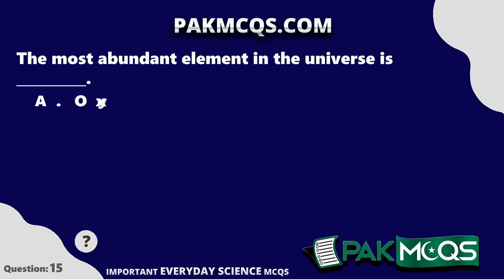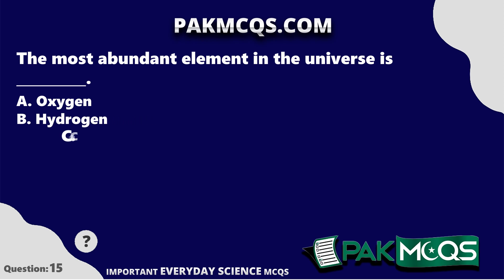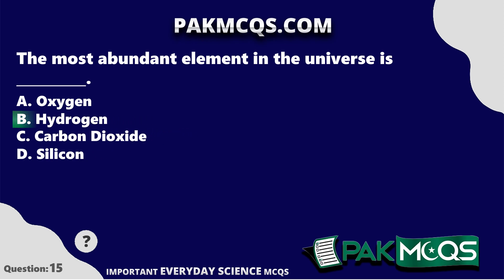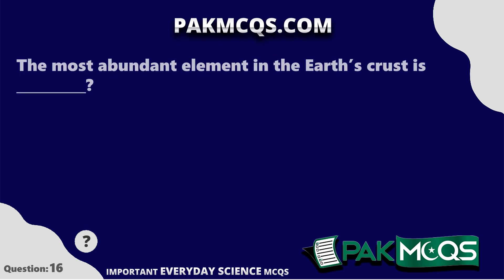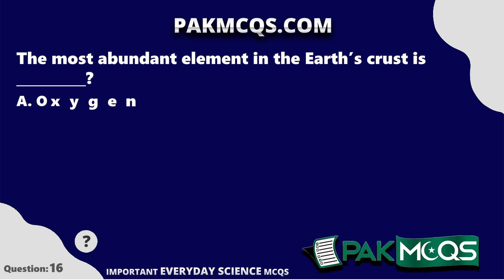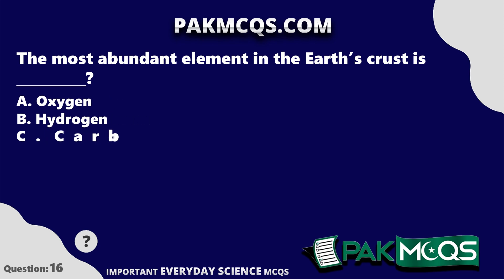The most abundant element in the universe is Hydrogen. The most abundant element in the earth's crust is Oxygen.